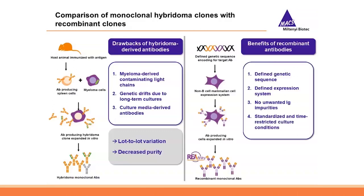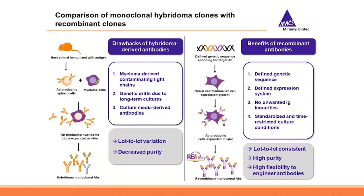Recombinant Reaffinity antibodies, on the other hand, are genetically engineered. A defined DNA sequence is introduced into mammalian cells programmed to only express that product. Because they are not derived from B-cells and are cultivated under defined conditions, no contaminating light chains can be present. They therefore have high purity and lot-to-lot consistency. Because they are genetically engineered, they can also be altered in a defined way, as I will explain for our Reaffinity antibodies.